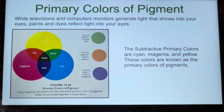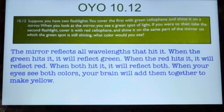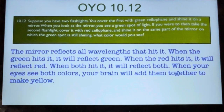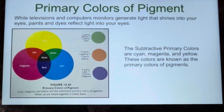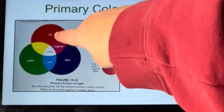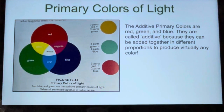Finish up by answering the last two On Your Own questions of Module 10. On Your Own 10.12: Suppose you have two flashlights. You cover the first with green cellophane and shine it on a mirror. When you look at the mirror, you see a green spot of light. If you were to then take the second flashlight, cover it with red cellophane, and shine it on the same part of the mirror on which the green spot is still shining, what color would you see? The mirror reflects all wavelengths that hit it. When the green hits it, it will reflect green. When the red hits it, it will reflect red. When both hit it, it will reflect both. When your eyes see both colors, your brain will add them together to make yellow. So red on top of green makes yellow — they are added together as the primary colors of light.